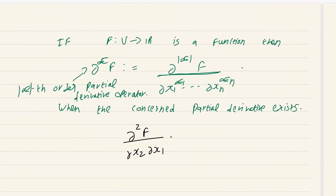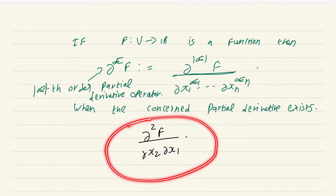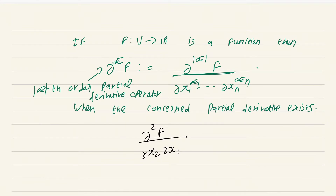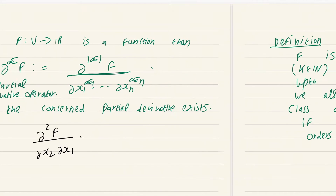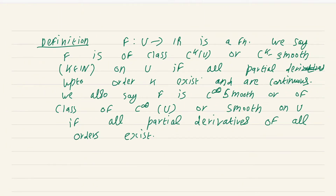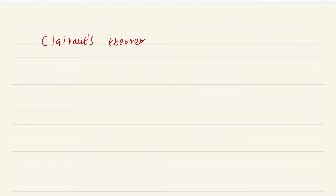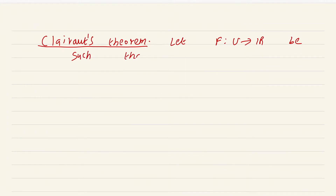Coming back to the situation where there is no way to express del^2 f / del x_2 del x_1 in our concise multi-index notation: this is not much of an issue because in most scenarios the function will be well-behaved enough so that these things are equal. That is the famous theorem which you must have learnt in multivariable calculus, but probably without proof. This is called Clairaut's theorem. The setting is: let f from U to R be such that d2d1f and d1d2f both exist and are continuous.